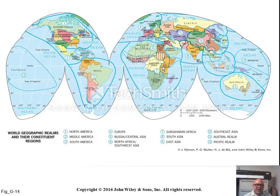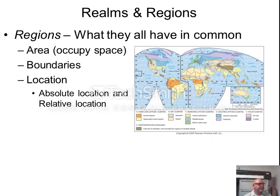When it comes to regions, they all have something in common. They have an area, or they occupy space that we can measure. They have boundaries, and they have a location — both absolute and relative location.